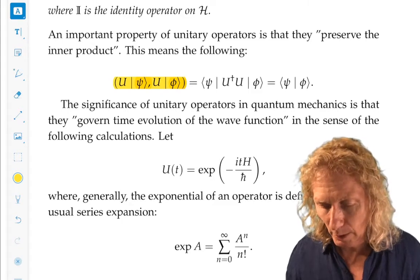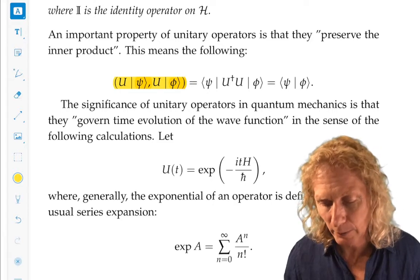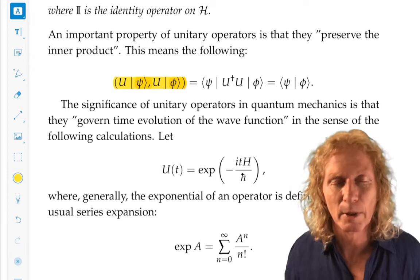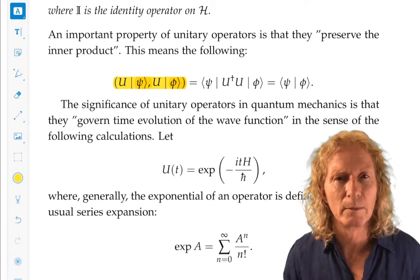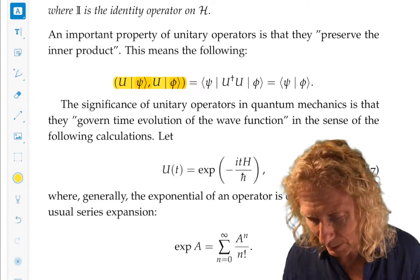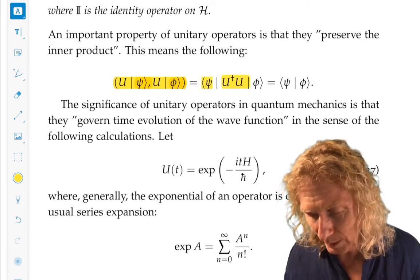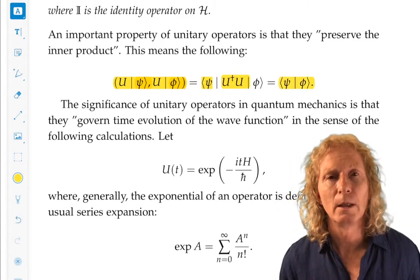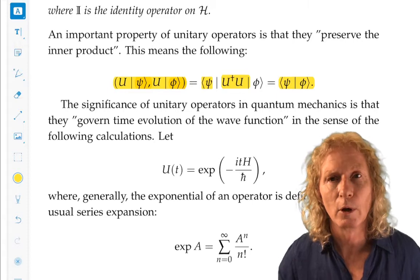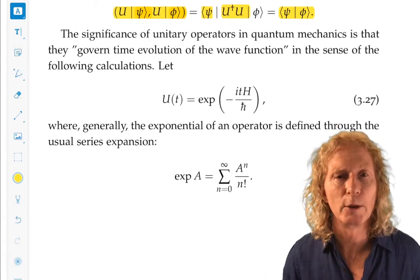But now going over to Dirac notation, remember I can take the U on the left over to the right, immediately to the left of the other U, but I pick up an adjoint sign in the process. But U†U is identity, and this is what we get. So this is what it means for the inner product to be preserved by unitary operators.